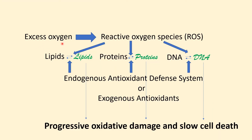How does excess oxygen gradually kill cone cells in RP retina? The excess oxygen creates reactive oxygen species, which are highly reactive substances that damage critical components of the cell — lipids, proteins, and DNA. In this schematic, the green script represents lipids, proteins, and DNA that have been damaged. One hit does not inactivate these molecules, but in RP retina there's such a high level of reactive oxygen species that there's constant bombardment. This gradually causes such severe damage that the molecules lose function, and when a critical number become dysfunctional, the cone cell dies.